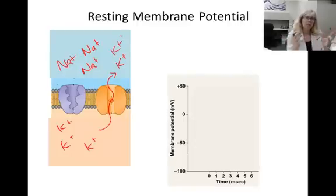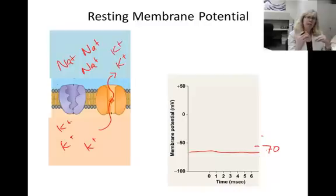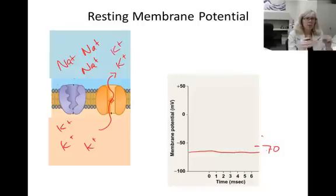An electrode that measures the difference would measure about negative 70 millivolts — the inside is more negative than the outside. This is called the resting membrane potential.